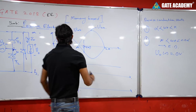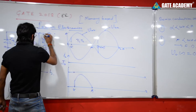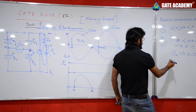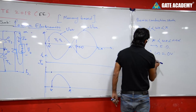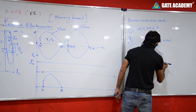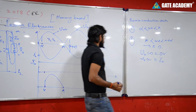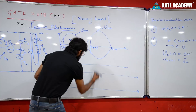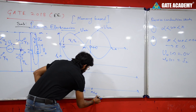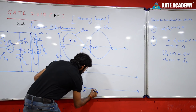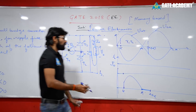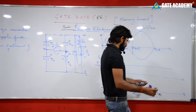During freewheeling diode conduction, the I_not current value remains the same — I_not will flow through the freewheeling diode, so I_not(t) equals I_not. The output voltage is zero from π to π+alpha.